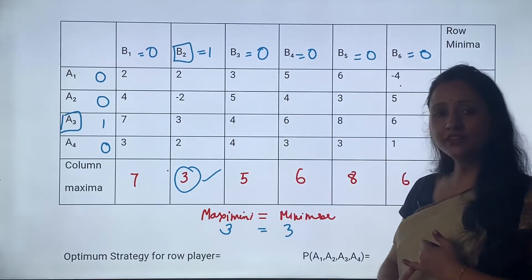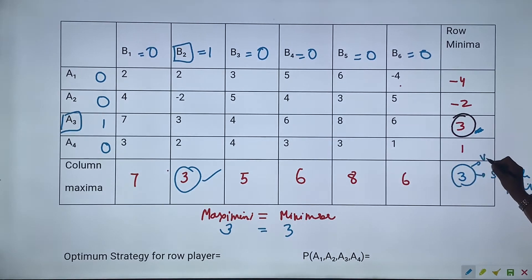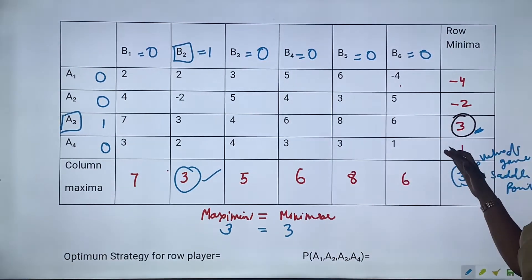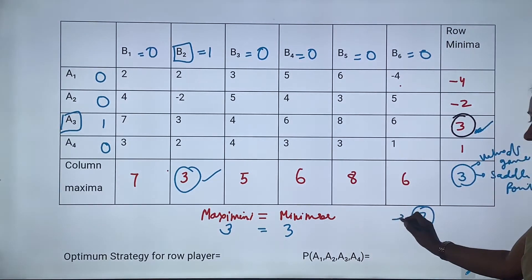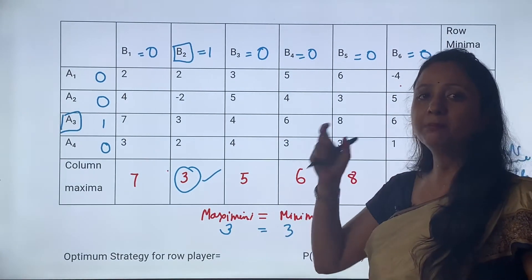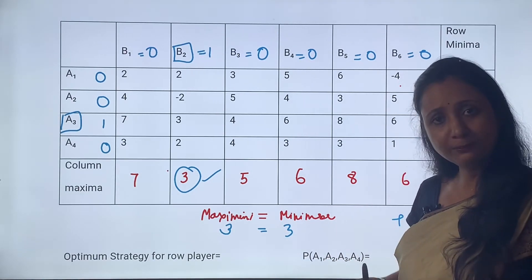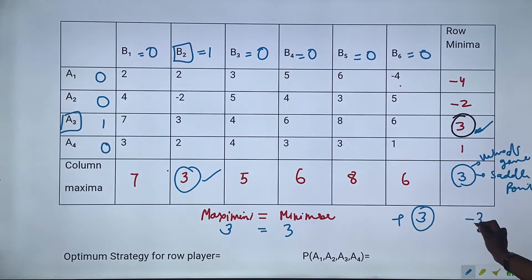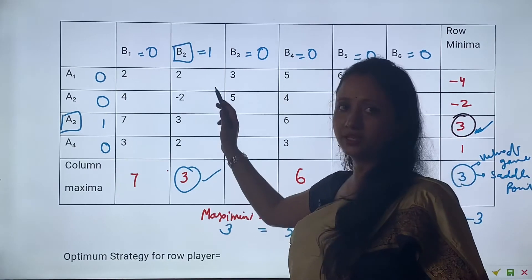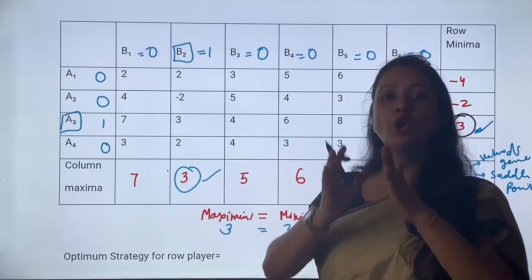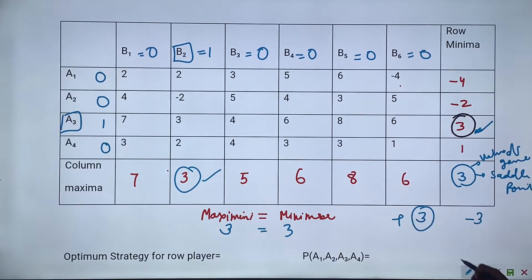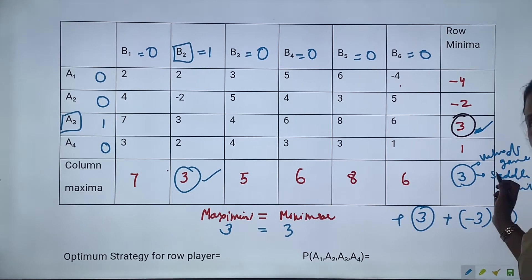Now the value of game: जो saddle point होता है वो ही value of game है। With the reference of row player, value of game हुआ 3. Row player के लिए यह 3 positive में है, that means इसको इस point पर maximum profit हो रहा है। In the reference of column player - यह positive है तो column player के लिए loss होगा, value of game होगा minus 3। अगर वो B2 strategy use करता है तो उसको minimum loss होता है - तो उसके लिए भी यह optimum strategy हो गई। Sum of the game: 2-person zero sum game में plus 3 plus minus 3 = 0. तो यह हो गया 2-person zero sum game.